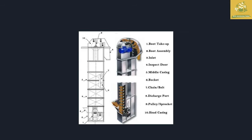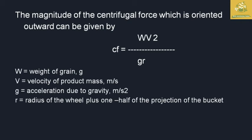The ninth part is the pulley socket and the tenth is the head casing — that is how the bucket elevator works. The centrifugal force of the material can be calculated by the formula: centrifugal force = W·V² / (g·r), where W is the weight of the grain, V is the velocity of the product in meters per second, g is the acceleration due to gravity, and r is the radius of the wheel plus one half of the projection of the bucket.